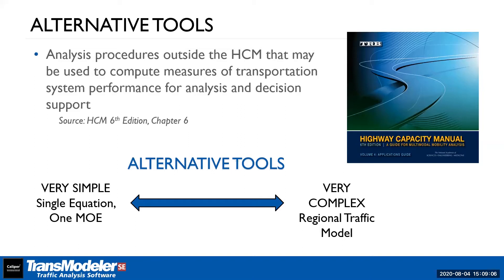As far as the Highway Capacity Manual goes, we're now in the sixth edition, which is the most current. We changed the naming to get away from the year and go with the edition number. Within the next year to 18 months we're going to have an HCM 6.1 that will include some changes, additional materials, and will be electronic — that was one reason for that change.